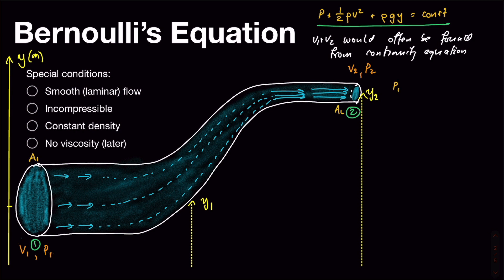p1 plus 1 half rho v1 squared plus rho g y1 would then equal p2 plus 1 half rho v2 squared plus rho g y2. And so now we've got an equation which relates together the elevations, which we may well know from our problem, the velocities, which we may well know from our continuity equation, and the pressures at different points in our pipe.